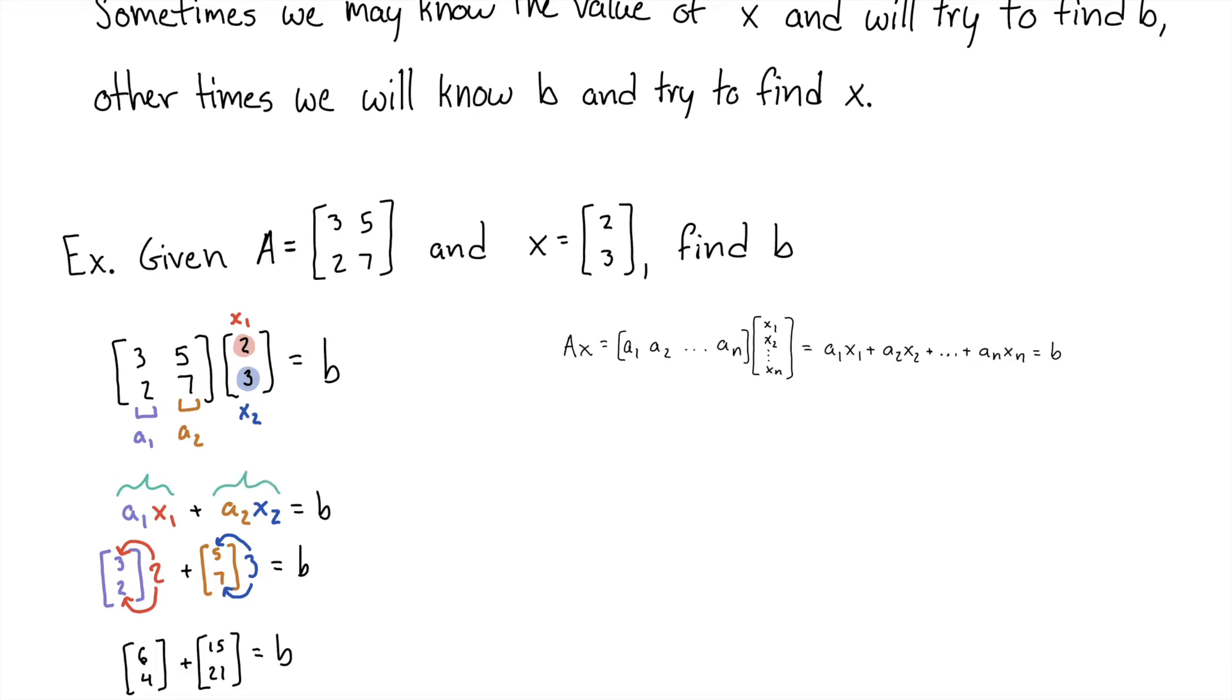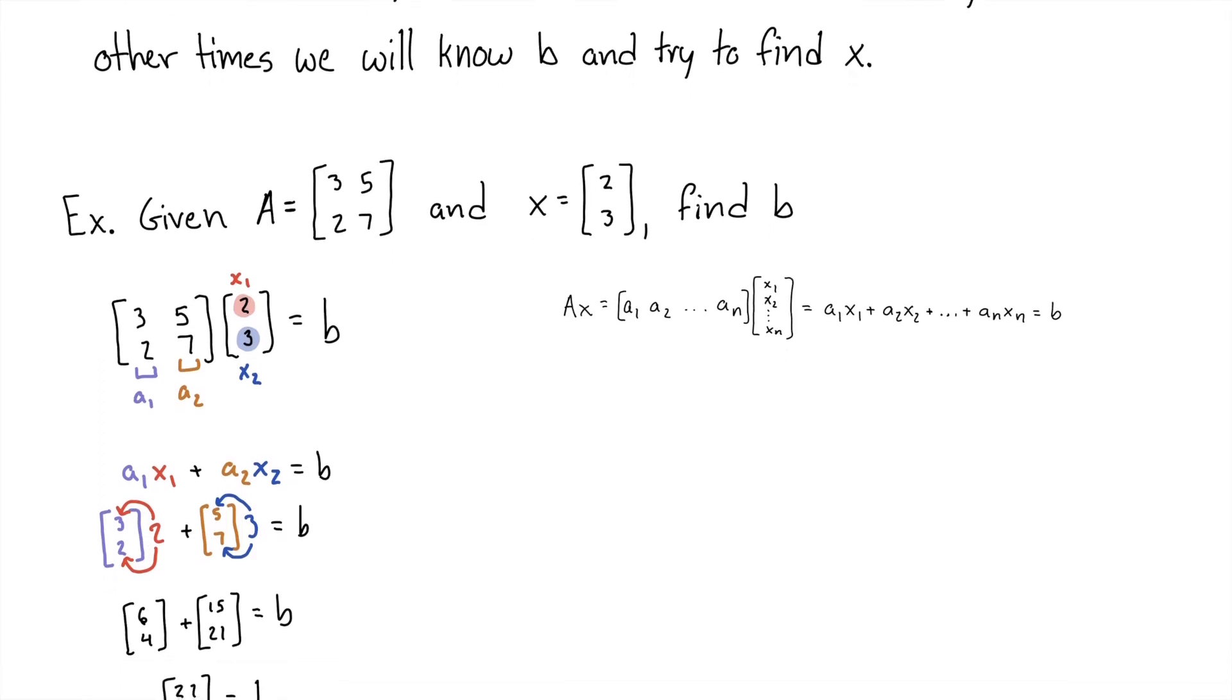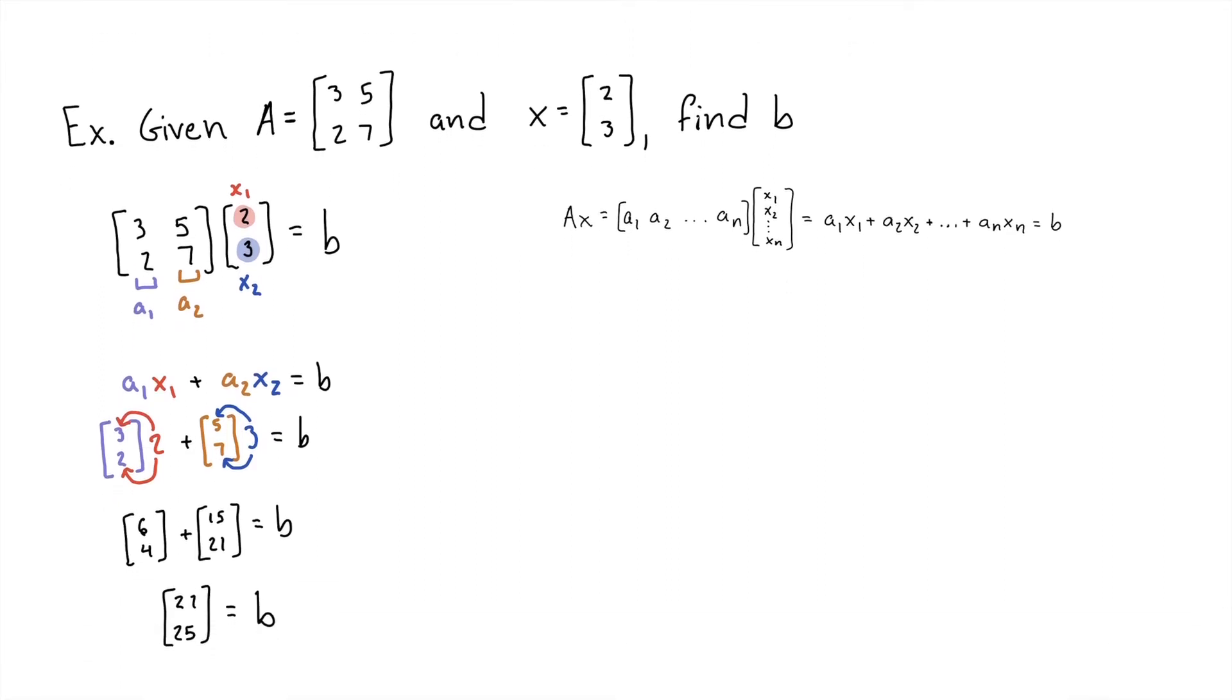Once we've done that, we have matrix 3, 2 times 2, and 5, 7 times 3. Doing 2 times 3, 2 times 2, we get 6, 4, and 3 times 5, 3 times 7, 15, 21. So then we're left with the matrices 6, 4 and 15, 21, which we can add together to get our answer of 21, 25 for B. That's the answer to this question.